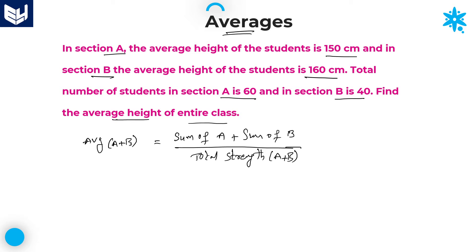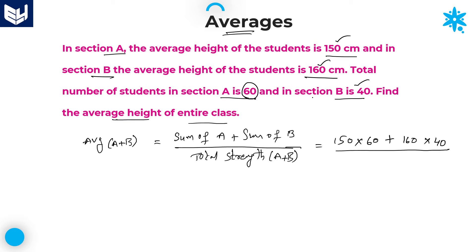To calculate the sum of section A: sum equals average multiplied by number of observations. The average of section A is 150 cm, multiplied by 60 students. Plus, for section B, the average is 160 and the strength is 40, so 160 into 40. The whole is divided by the total strength of both sections together: section A is 60 and section B is 40.